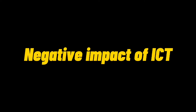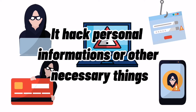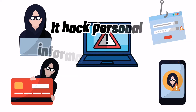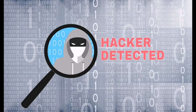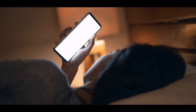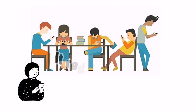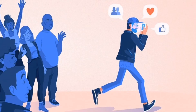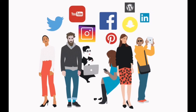Now let's talk about the negative impacts of ICT. First, it can hack personal information or other necessary things, so you must keep personal information professional and limited, and always be careful of what you click, what you agree on, and what you download. Second, it affects sleeping habits — a lot of people stay up too late at night texting friends, watching, reading, or scrolling through their social media, and doing this often will harm your health. Third, it reduces personal interaction — the majority of people now spend more time on social media or social networking sites and are already glued to their devices, so they have less time to do other activities or to hang out with other people.